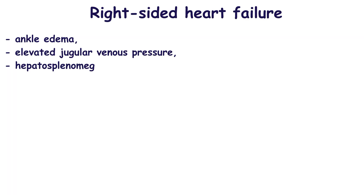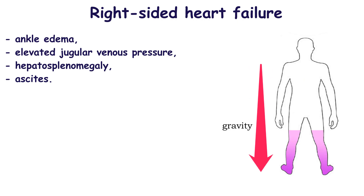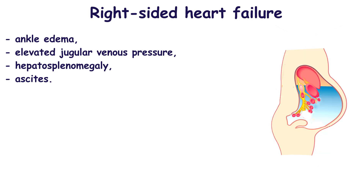Right-sided heart failure is characterized by ankle edema, elevated jugular venous pressure, hepatosplenomegaly, and ascites. In this case, blood moves back into the right atrium and vena cava, causing congestion in the veins of the systemic circulation. Blood moves to the interstitial space of the liver, spleen, and legs, which can cause hepatosplenomegaly, cardiac cirrhosis, and pitting ankle edema. Pressure of the blood in the veins of the lower limbs increases when patients take long-term sitting or standing positions due to gravity, and edema reduces when the patient lies down. The fluid from the interstitial space migrates into the peritoneal space, leading to ascites.